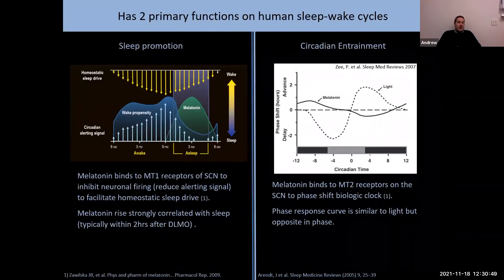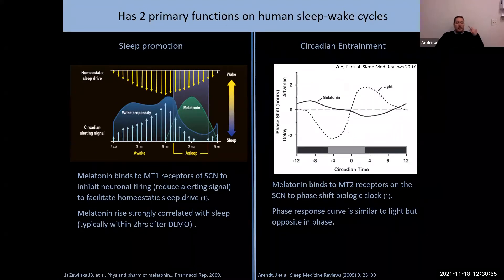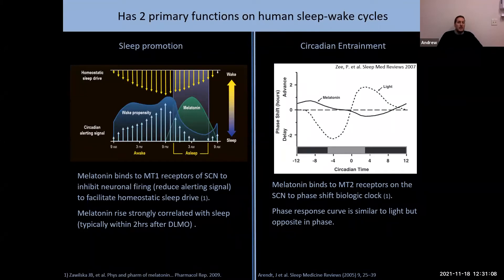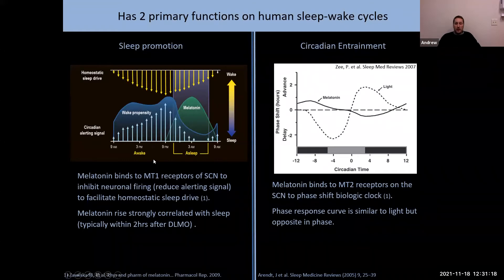Melatonin has two primary functions regarding the sleep-wake cycle: sleep promotion and circadian entrainment. For sleep promotion, melatonin circulating during the dark phase binds to receptors on the SCN, suppressing the circadian arousal signal and facilitating homeostatic sleep drive — explaining why the rise in melatonin is so strongly inversely correlated with the decrease in our alerting signal. And just like light, melatonin can help entrain our intrinsic clocks through phase shifting.